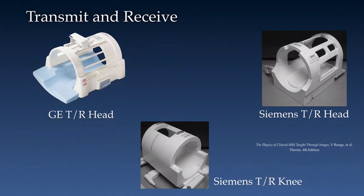Here are some examples of transmit and receive coils. On the upper left, from a GE system. On the upper right, from a Siemens system. And in the lower middle, you see an example of a transmit and receive knee coil, also from a Siemens system.